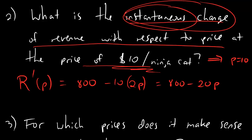So plugging in $10 for p, we get r prime of 10 is 800 minus 20 times 10, which is 800 minus 200, and that, my dear fellows, is 600.